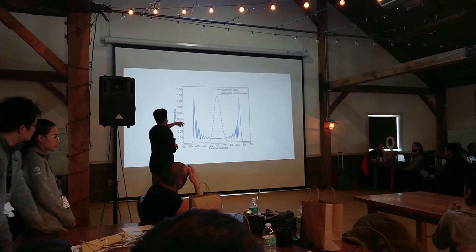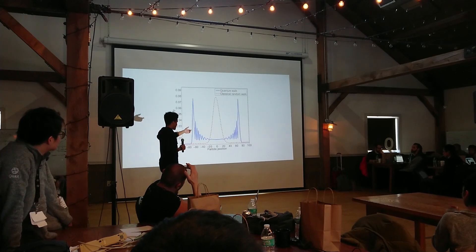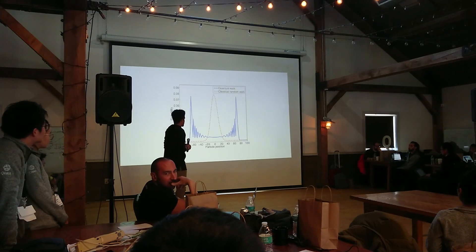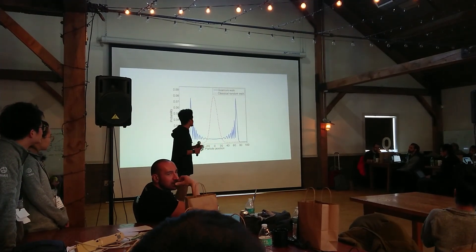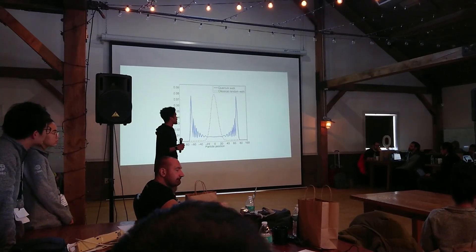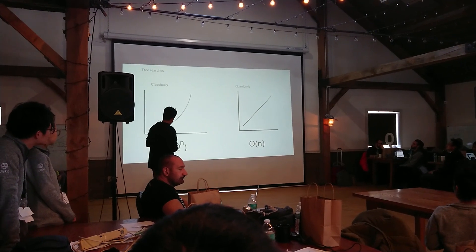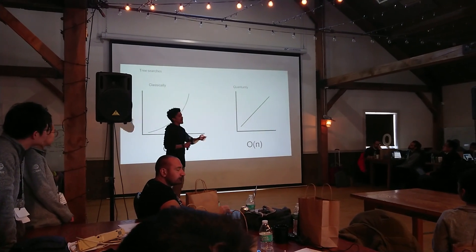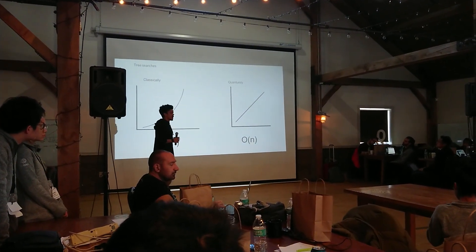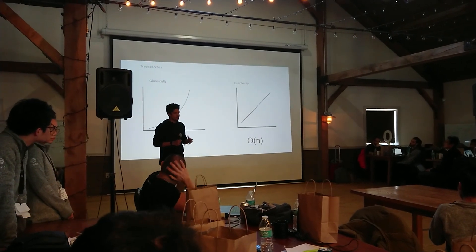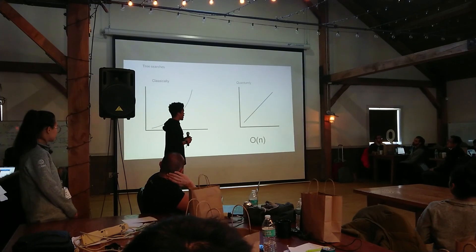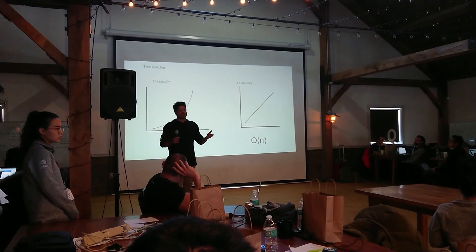We see a distribution that is centered about the center, whereas when you use a quantum walk, due to how wave packets propagate throughout space, you actually get to the end of the tree much more efficiently. These are not actual data figures, but you can find the data in the Childs paper. Basically, classically, for certain kinds of graphs, the best you can do is exponential time, whereas for quantum random walks it's linear in depth, which is really helpful.